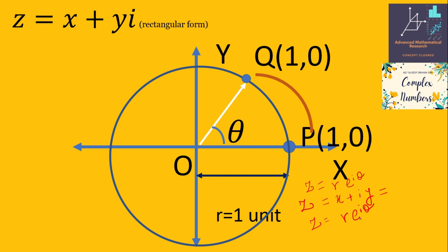The meaning of e^(iθ) is that if we have a vector r, then we are rotating this vector by an angle theta. So point P is rotating by an angle theta to obtain another complex number Q, and we write this complex number Q as r times e^(iθ).